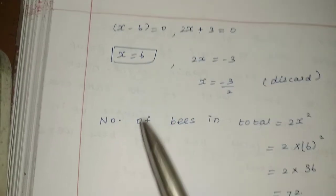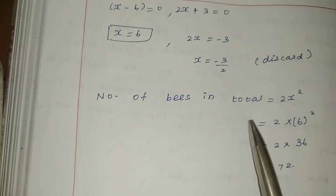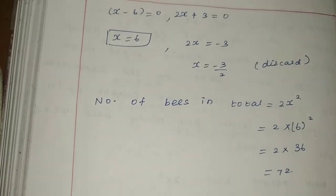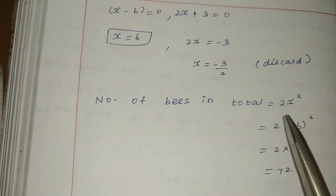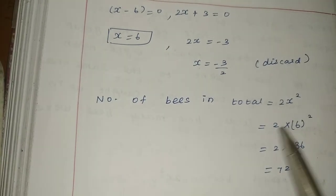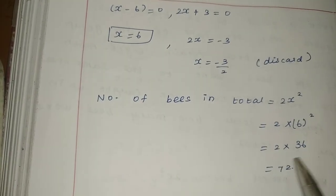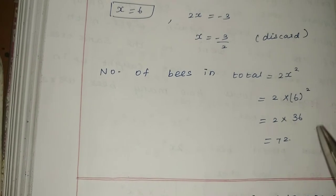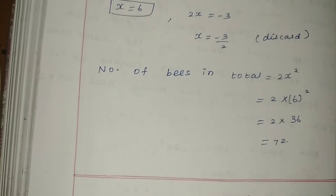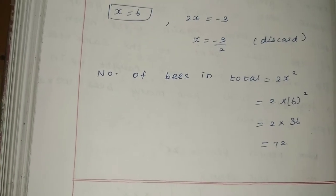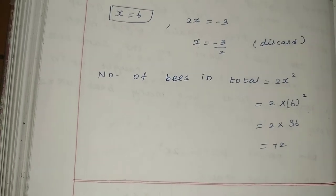Therefore x = 6. Total number of bees = 2x² = 2 × 6² = 2 × 36 = 72. Clear. Thank you.